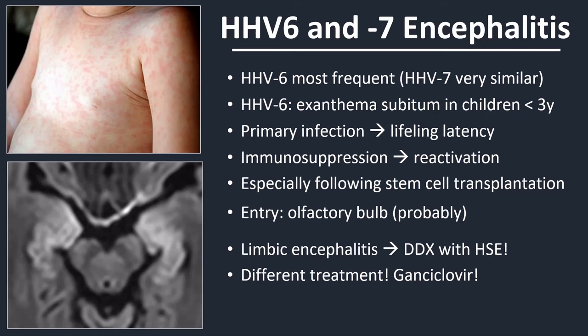Herpes simplex encephalitis is treated with acyclovir, and human herpesvirus type 6 with ganciclovir. Human herpesvirus type 6 is the most frequent of the two viruses. Human herpesvirus type 7 looks very similar genetically to type 6, but it's a bit unclear if the virus is actually responsible for disease. We know it exists and looks a lot like type 6, so it's assumed it can also cause disease, but this is uncertain at the moment.